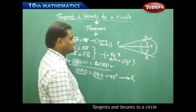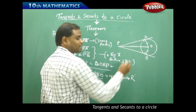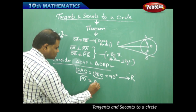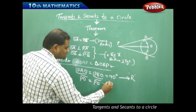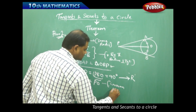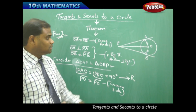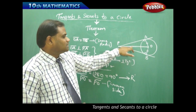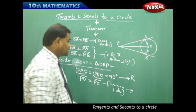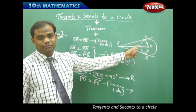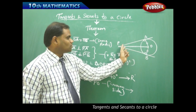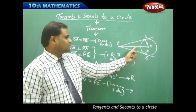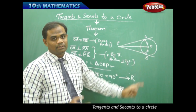Similarly, PO is the common side for both triangles, therefore the length PO is equal to PO itself — it is common for the two triangles. Importantly, PO is the hypotenuse for both right triangles, as it is the side opposite to 90 degrees in each of the triangles.